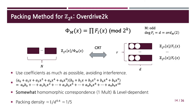Overdrive2K aims to improve the packing density of HELIP packing by observing that somewhat homomorphic correspondence up to one multiplication is enough for MPC preprocessing. The idea is to use coefficients as much as possible but avoiding interference. For example, if we pack messages into coefficients of degrees 0, 1, 3, 4, and 9 and multiply, as it is carefully designed, coefficients of 0, 2, 6, 8, and 18 encode the product of messages. By this means, Overdrive2K achieves somewhat homomorphic correspondence up to one multiplication. Note that this packing method is level dependent, meaning that the packing structure changes after multiplication. The authors claim that the packing density of their method is asymptotically 1 over d^0.4 and is roughly 1 over 5 for practical parameters.